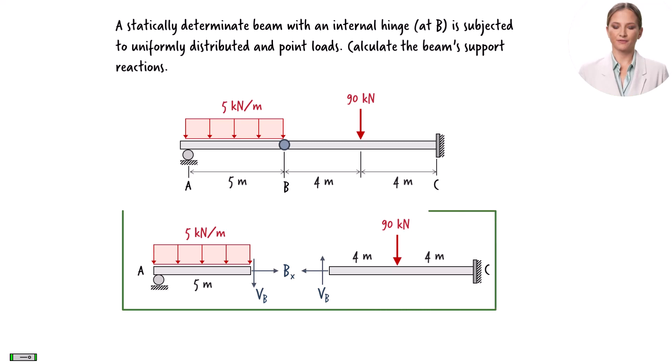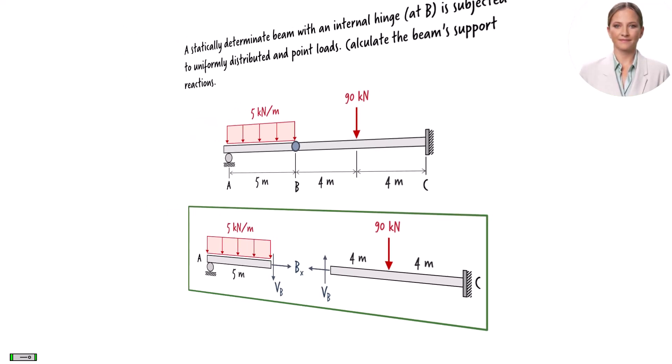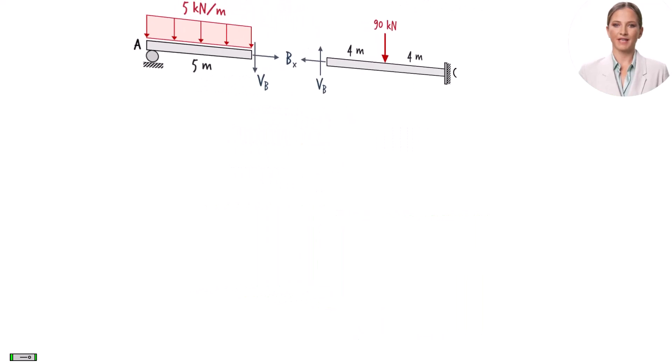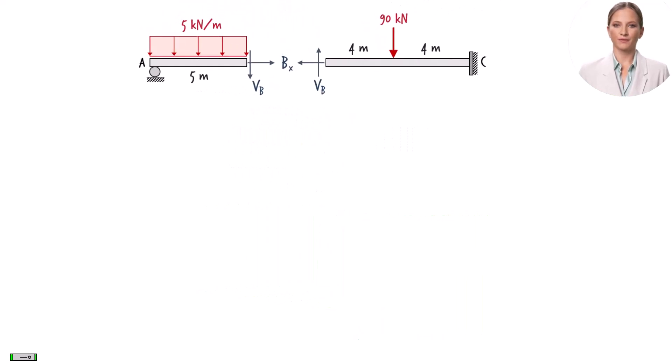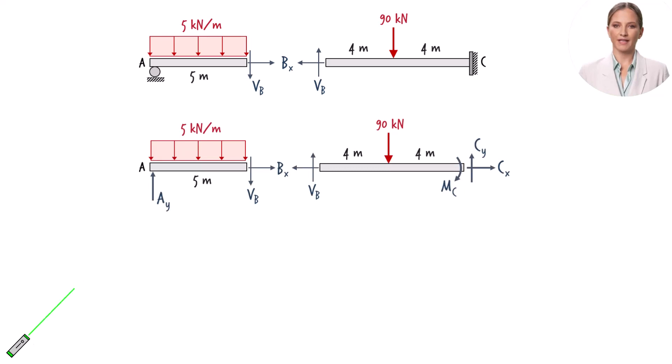This represents a partial free-body diagram of the beam. To complete the diagram, we need to show the support reaction forces. The roller support has one vertical reaction force. The fixed support has three reaction forces.